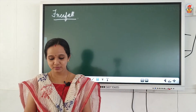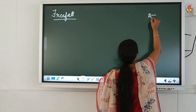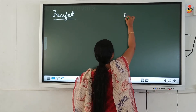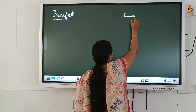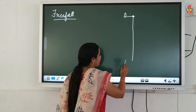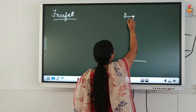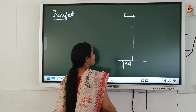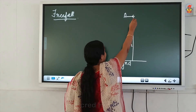Suppose an object is initially at point A, which is at a height h from the ground.